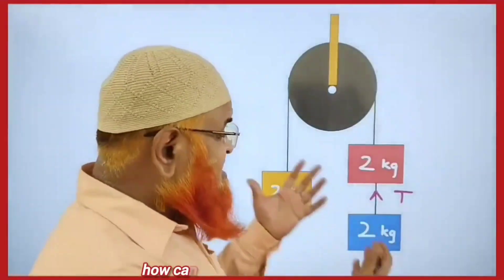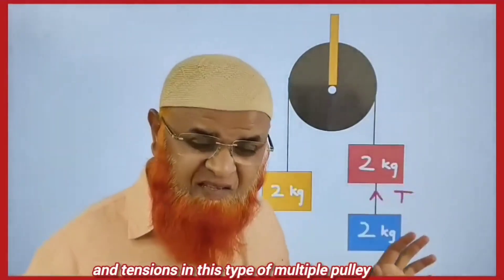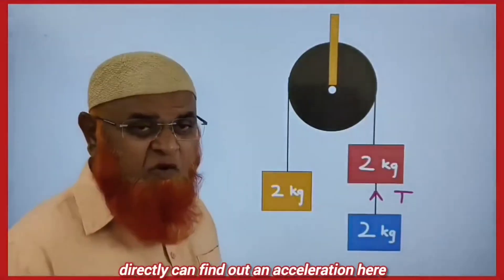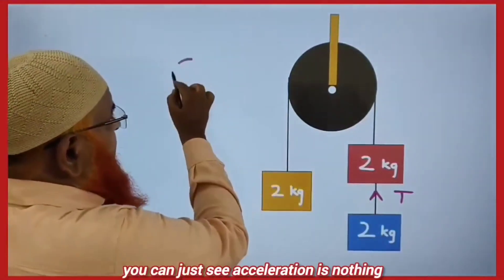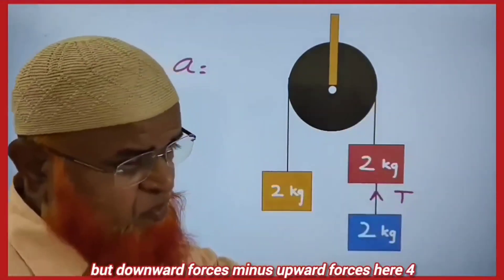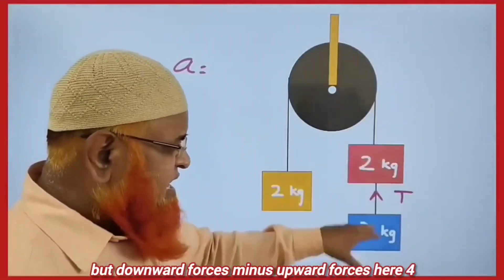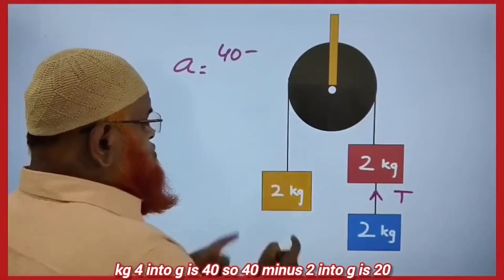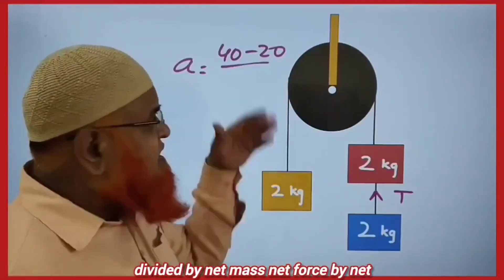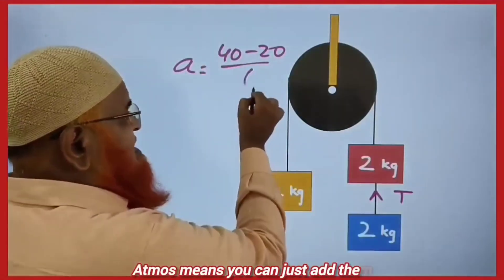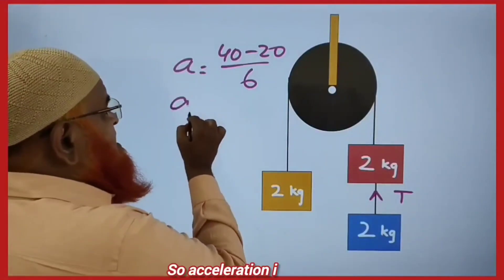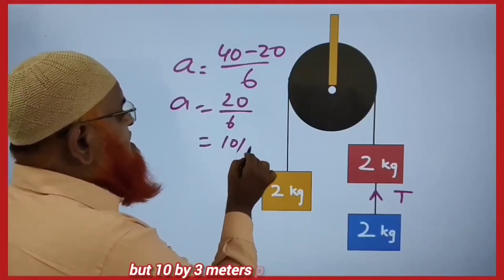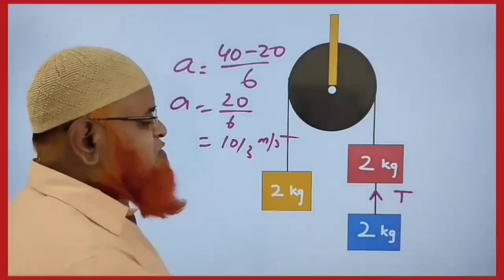Let me discuss how you can find out acceleration and tensions in multiple pulley cases without using any free body diagram. Directly, acceleration is nothing but downward forces minus upward forces divided by net mass. Here 4 kg: 4 into g is 40. So 40 minus 2 into g is 20, divided by net mass 6. Acceleration is 20 divided by 6, which is 10/3 meters per second squared.